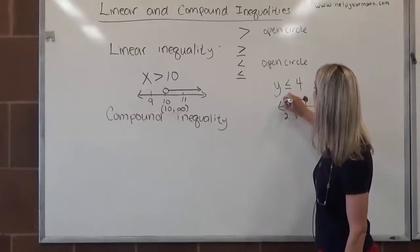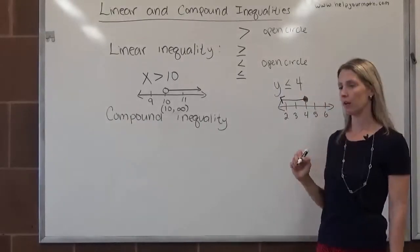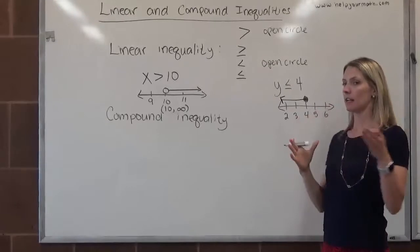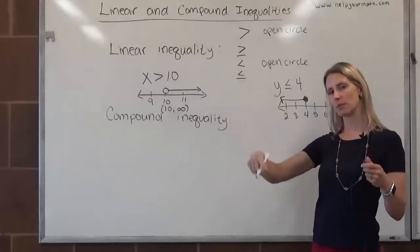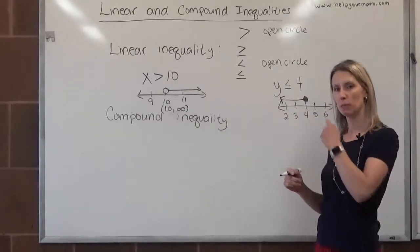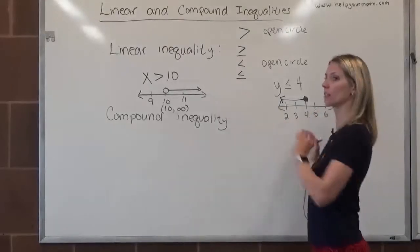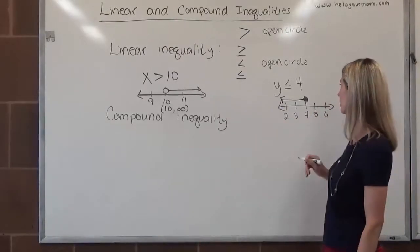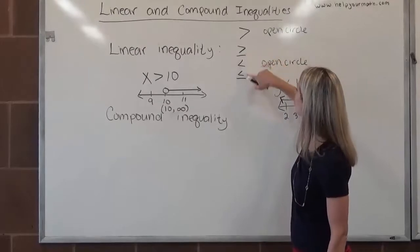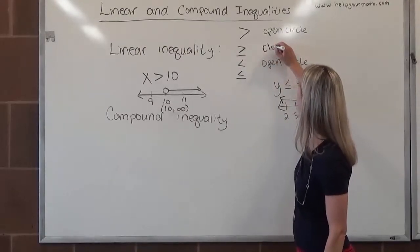To the left of 4 on a number line, so we would go to the left and draw an arrow that way. Instead of drawing a bunch of points to represent everything, because it's impossible to draw all the points, we use a line to indicate all the points along here are part of the solution set. When we have or equal to, we use a closed circle.